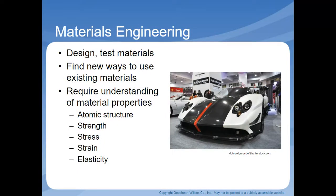Materials engineers design and test materials. They find new ways to use existing materials. They require understanding of material properties, atomic structure, strength, stress, strain, and elasticity. An example of a materials engineer would be the engineer that designs the exterior of the vehicle — the materials it's built out of, such as plastics, fiberglass, or metal.